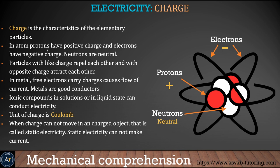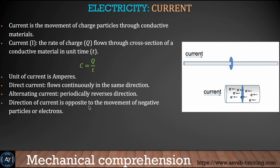In electricity, the first concept to learn is charge — the characteristic of elementary particles. In atoms, protons have a positive charge, electrons have a negative charge, and neutrons have no charge (neutral). The unit of charge is the coulomb. The three main things to learn in electricity are current, resistance, and voltage.